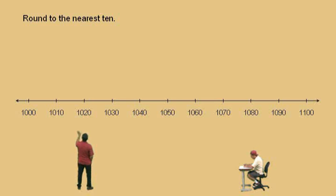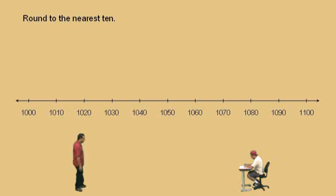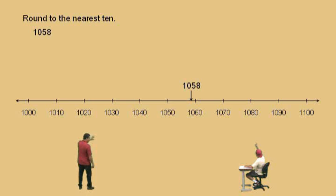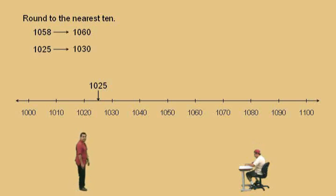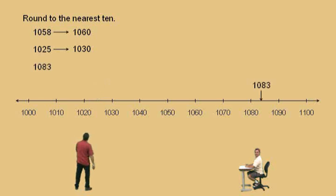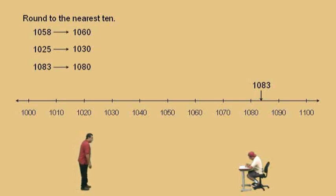Now we're going to go back and round to the nearest ten, but notice we have a new scale. It's broken up into increments of tens, but we're starting with a thousand — 1,010, 1,020, until we get to 1,100. Let's start with our first number, Charlie: 1,058. Which ten is it closest to? 1,060. Very nice. How about 1,025? It's in the middle, so we round to the right — 1,030. Very nice, Charlie. And 1,083 — what does that one round to? 1,080. Very nice.